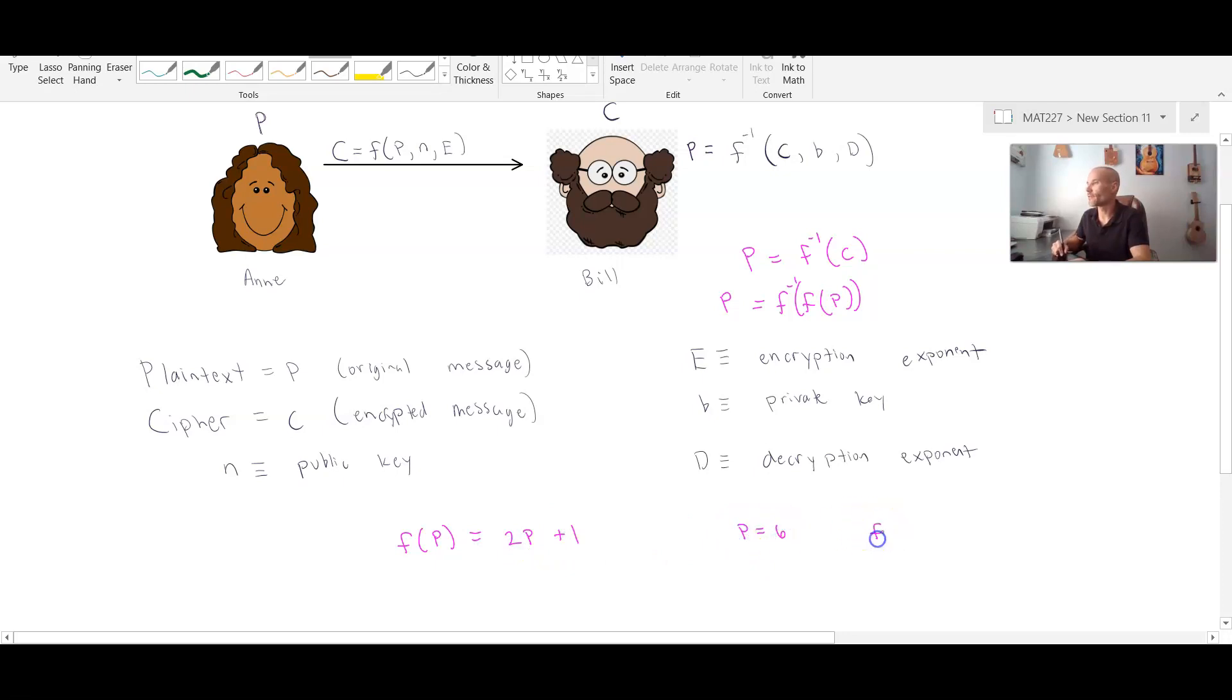And your plain text value is say 6, then f of 6 is going to be 2 times 6, which is 12 plus 1, which is 13. And that would be the ciphertext.